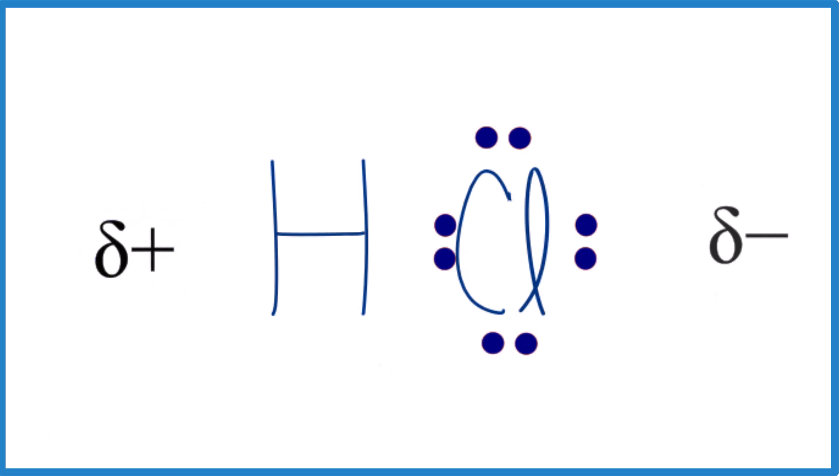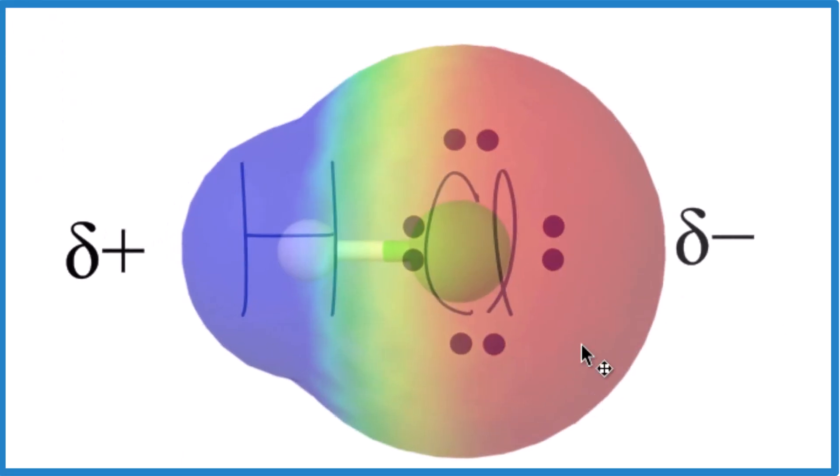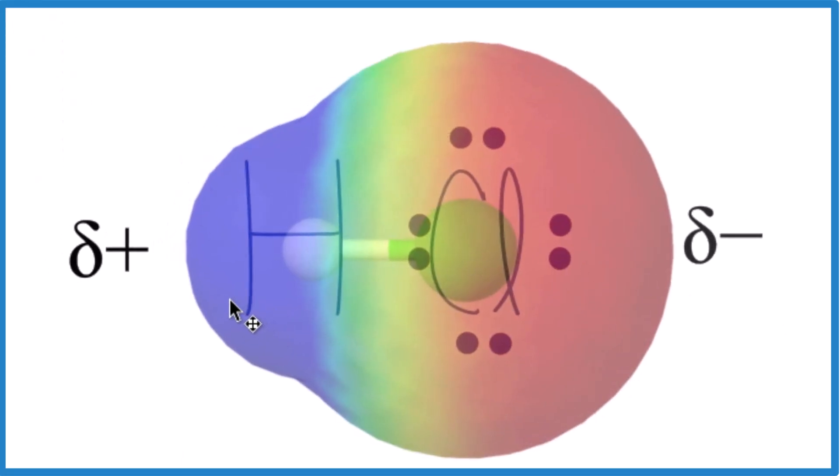You can think of the surface of the molecule like this. The red's more negative, blue more positive. It's a polar molecule. So electronegativity helps us understand polarity.